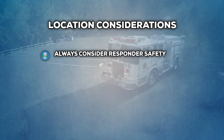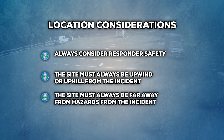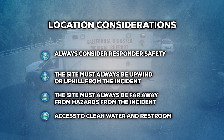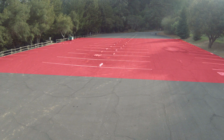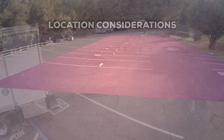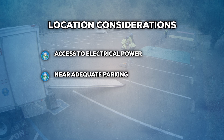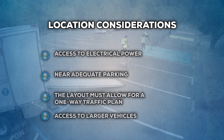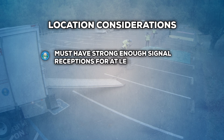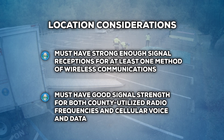The site must always be upwind and/or uphill from the incident, or sufficiently far away that no hazards from the incident location can compromise the site. Access to clean water and restrooms will also be needed. The total area needed is about 150 feet by 150 feet. The site should have access to electrical power either by landline or generator, and should be near adequate parking for support personnel and staging emergency vehicles. The layout must allow for a one-way traffic plan for ground-based resources and also allow access for larger vehicles such as buses and helicopters. The location must have strong enough signal reception for at least one method of wireless communications, with ideal signal strength for both county-utilized radio frequencies and cellular voice and data.